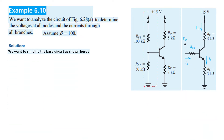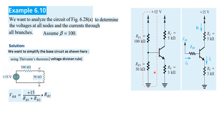We will simplify this portion of the circuit using Thevenin's theorem. We redraw the circuit with RB1 of 100kΩ and RB2 of 50kΩ. We apply the voltage divider rule to calculate the Thevenin voltage VBB: 15 divided by total resistance multiplied by this resistance gives VBB equal to 5 volts.